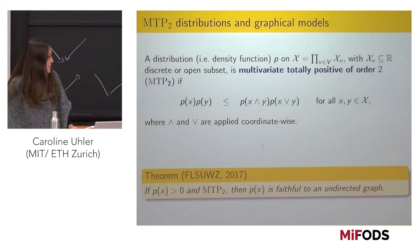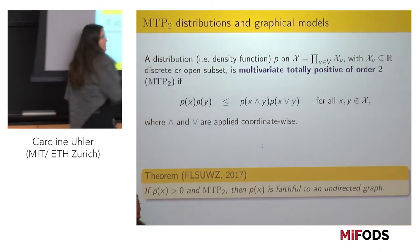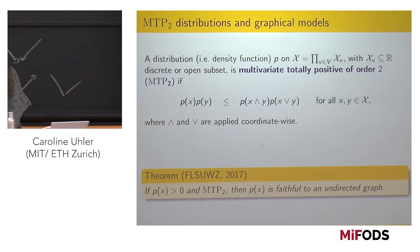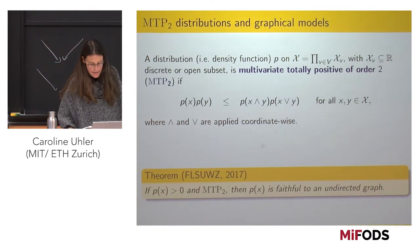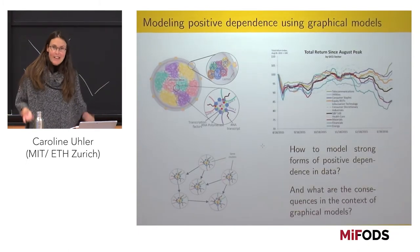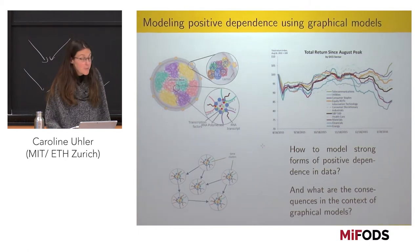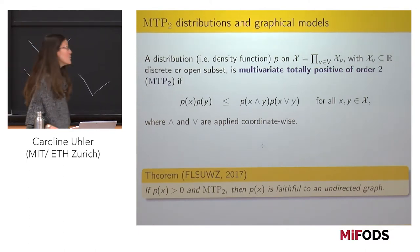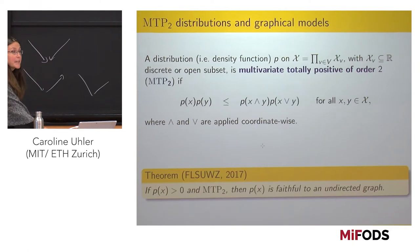MTP2 really rules out anything causal. However, it buys you a whole lot. In applications like this, you do want to be able to model using MTP2, because you know you have positive dependence and want to encode this. Since Alina did the non-parametric setting, let me show you all the nice things we know in the parametric setting.